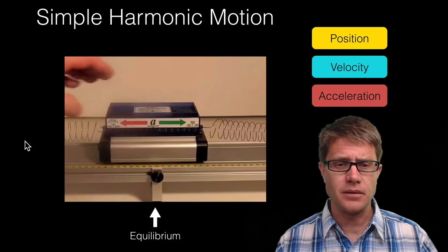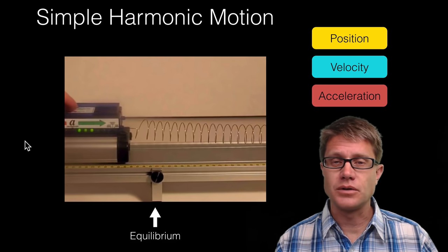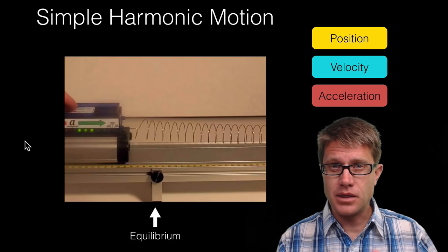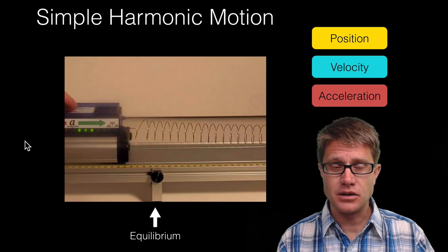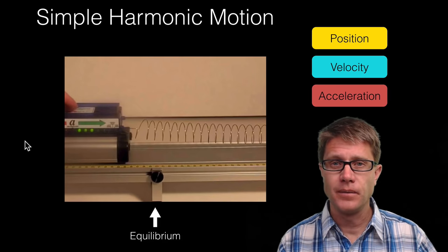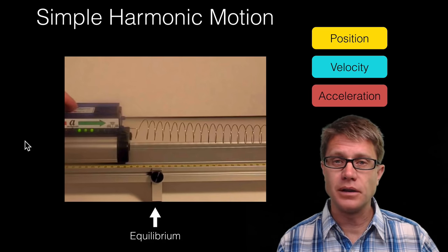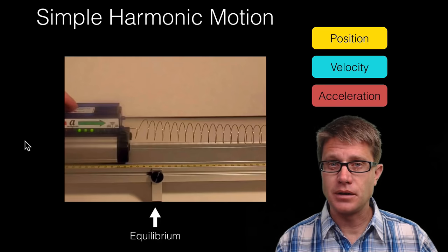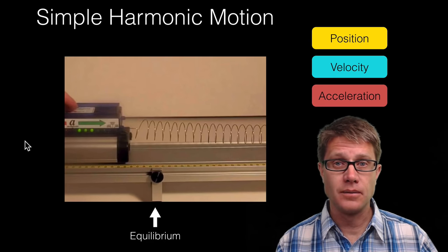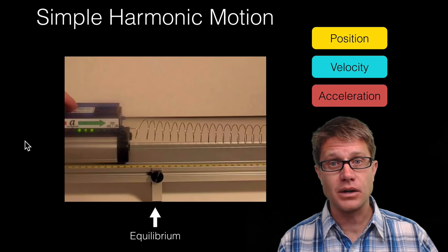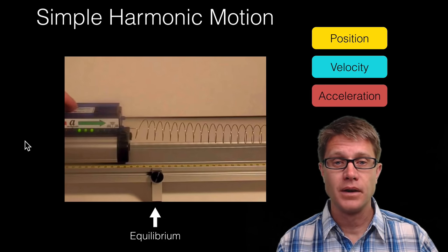Let's use this scenario. I am going to pull that object towards the left and let it go. At this point as it is starting to move, where is our position going to be? It is going to be maximum towards the left. What about our velocity at this point? It is going to be minimum — it is going to be zero. And what is going to be our acceleration? Our acceleration is going to be maximum towards the right.